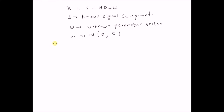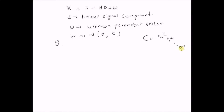The goal is to find an estimator theta hat. The key difference between the general model and the standard linear model is that the covariance matrix C has a non-diagonal structure — that is, C has values on the diagonal as well as on the off-diagonals.